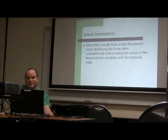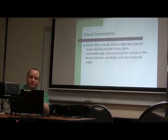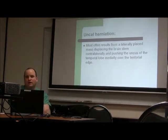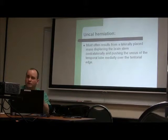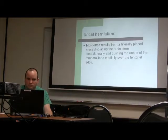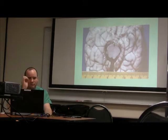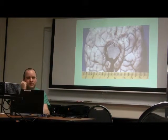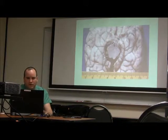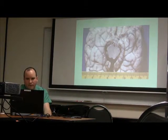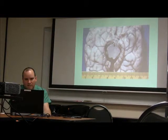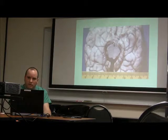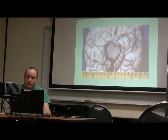Uncal herniation is basically the most common, and this is where the brain is displaced, putting pressure onto the brainstem and onto the temporal lobe over the tentorial edge. This is an anatomic pathology specimen — the brain viewed from the bottom. This is the midbrain, this is the temporal lobe, the frontal lobe, and the optic chiasm. The tentorium is rigid but the brain is trying to squeeze under there, which is why there's an indentation. Uncal herniation puts pressure on the third cranial nerve.